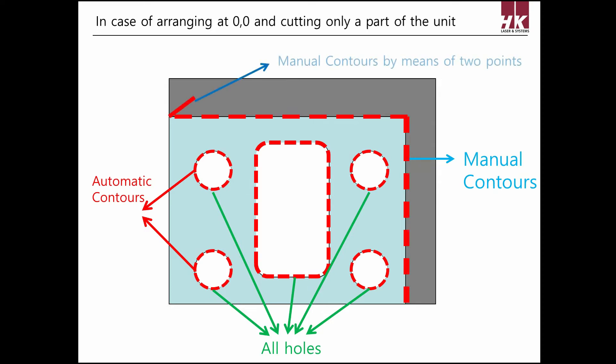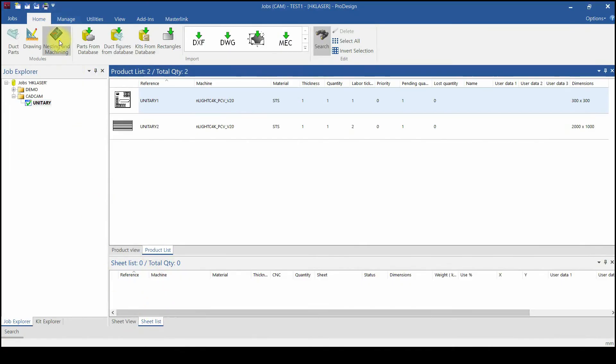The difference between manual contours and manual contours by means of two points is lead-in. Let me show you how it really works in Lentech.